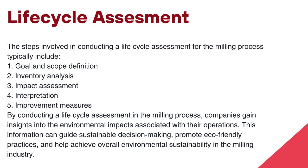4. Interpretation — analyze and interpret the results of the impact assessment to identify the significant environmental hotspots and areas for improvement within the milling process. This information can be used to prioritize sustainability initiatives and guide decision-making. 5. Improvement measures — based on the findings from the assessment, implement measures to reduce the identified environmental impacts. This may include optimizing energy efficiency, reducing waste generation, implementing recycling programs, sourcing sustainable materials, or adopting cleaner production technologies. By conducting a life-cycle assessment in the milling process, companies gain insights into the environmental impacts associated with their operations, which can guide sustainable decision-making, promote eco-friendly practices, and help achieve overall environmental sustainability in the milling industry.